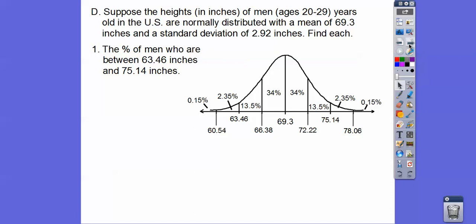All right. So find the percent of men who are between 63.46 inches and 75.14 inches. Now the reason why I had us do this right here with these numbers is, look, here's 63.46. Here's 75.14. That's within one, two standard deviations from the mean. So there it is right there. And two standard deviations of the mean is going to be about 95% of the data. So that represents about 95% of the men right there.